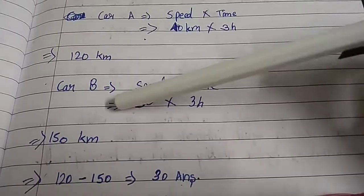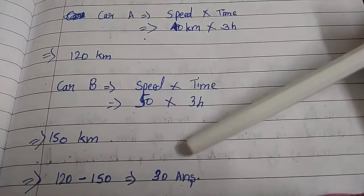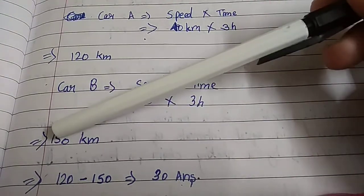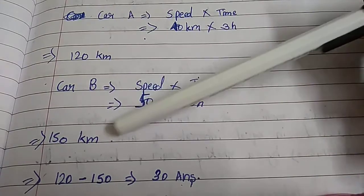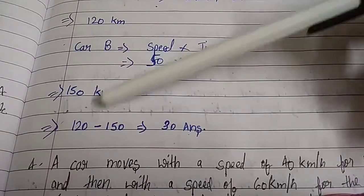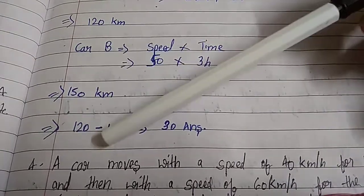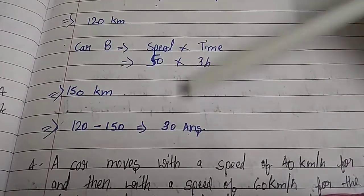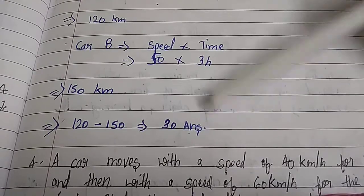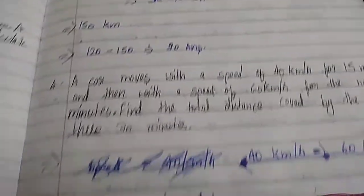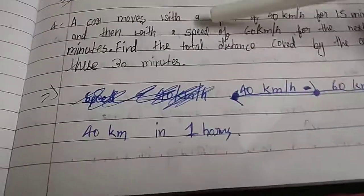Car B: speed equals 50 multiplied by 3, which equals 150 kilometers. We subtract them: 150 minus 120 equals 30. This is our answer which we asked after 3 hours.